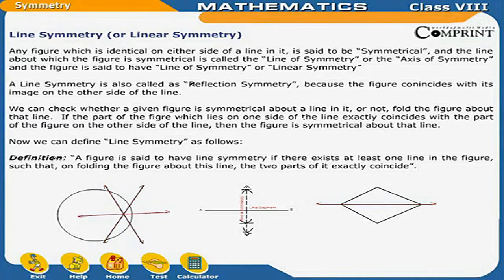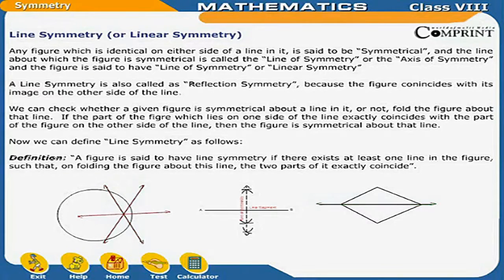We can check whether a given figure is symmetrical about a line in it or not by folding the figure about that line. If the part of the figure which lies on one side of the line exactly coincides with the part of the figure on the other side of the line, then the figure is symmetrical about that line. Definition: A figure is said to have line symmetry if there exists at least one line in the figure such that on folding the figure about this line, the two parts of it exactly coincide.